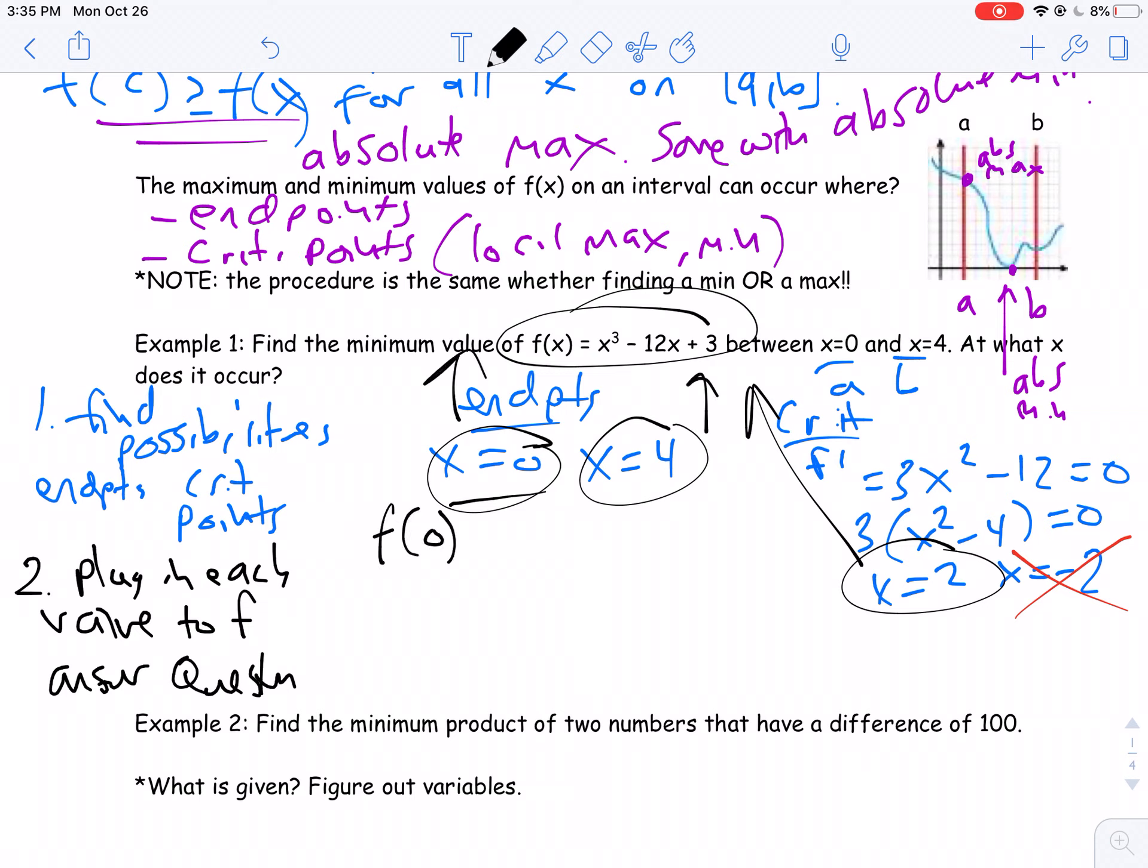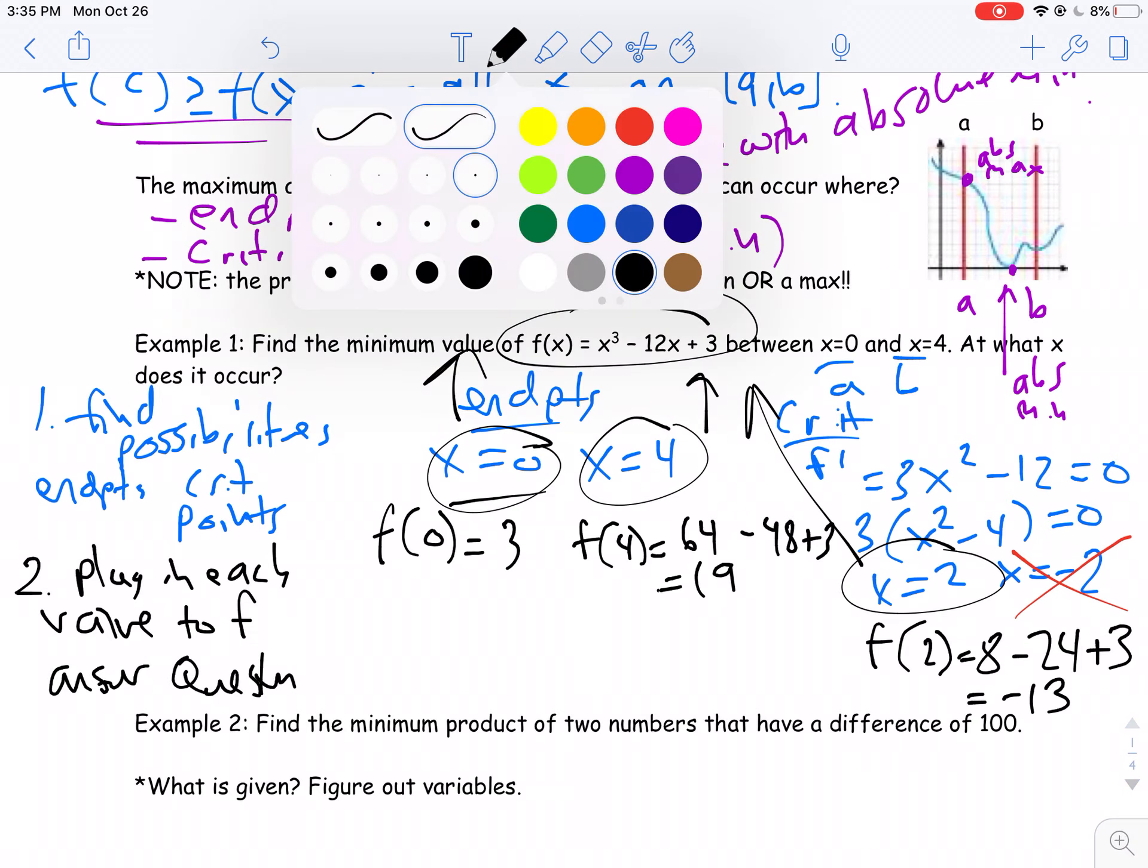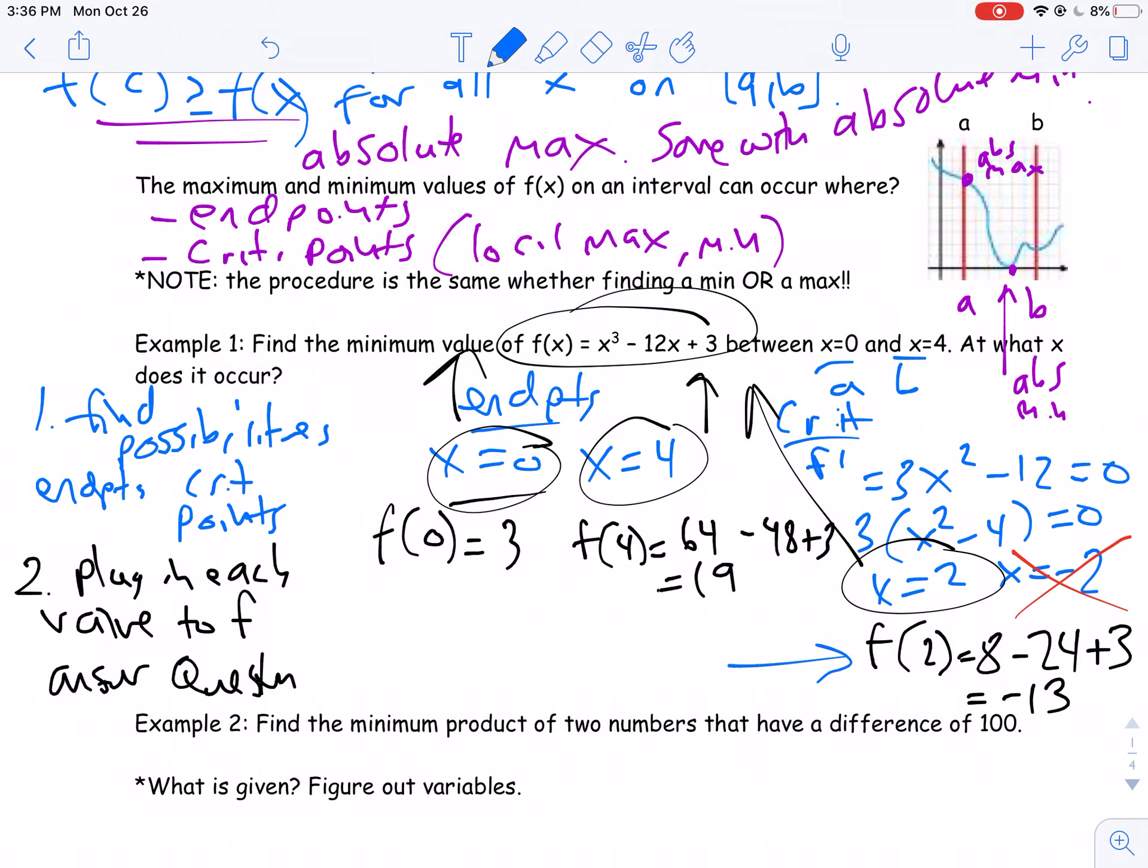Now, the second step here that I have to do, once I find my possibilities, now I'm just going to plug in each value to f. So I'm going to take these three possibilities and plug them in. So f of 0 equals 3. f of 4, 4 cubed is 64 minus 48 plus 3, that's 16 plus 3, I got 19. And then f of 2 is 8 minus 24 plus 3. So I got negative 13. The question asked me for the minimum value and find what x it occurs. So my minimum is negative 13 at x equals 2.